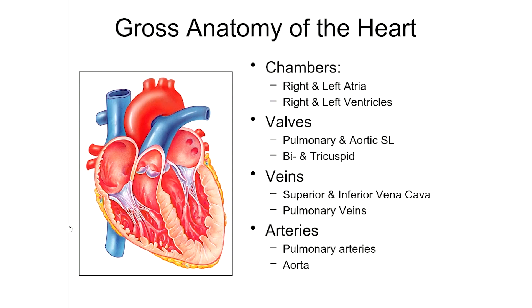So we've got this one-way flow of blood moving through the heart at all times. We've talked about the chambers and the valves and their roles. What I want to do now is also talk briefly about some of the major blood vessels that are attached to the heart — some veins and some arteries.